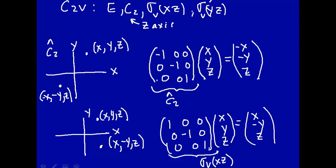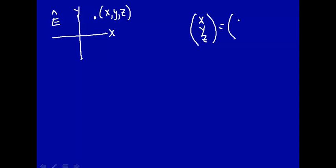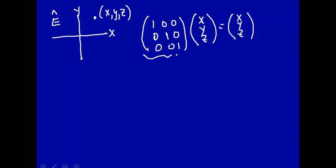Let's do all of them. For the identity operation, here's our X, Y plane with Z coming out towards you. The identity operation does nothing, so we want X, Y, Z to be transformed into X, Y, Z. The matrix to do that is just the one with 1s along the diagonal — the identity matrix. This is the matrix representation of the symmetry operation identity.